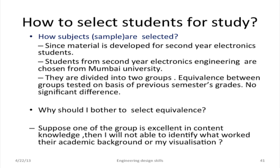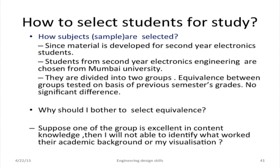How to select students for the study? They are the sample or subjects. Since my material is developed for second year electronics students, Mumbai University students were selected, divided into two groups, and equivalence between groups was tested based on their previous semester's grades — because the same subject was already taught to them and the content belongs to the same subject. No significant difference was found. Why bother with equivalence? If one group has an excellent academic record, they will overperform due to their background rather than my visualization. So we need to establish equivalence between the groups.